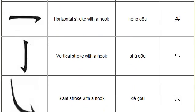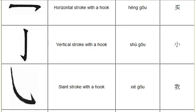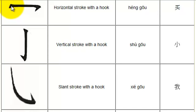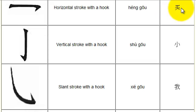Next you have heng gou. Gou means hook, so heng gou is a horizontal hook. It's drawn just like a horizontal stroke from left to the right, with a hook on the end. Put your pen down at the left, draw across to the right and hook. Here's an example of heng gou being used at the top of this character.